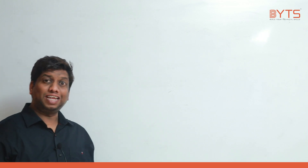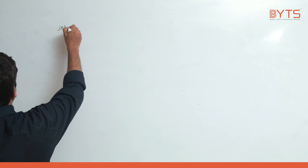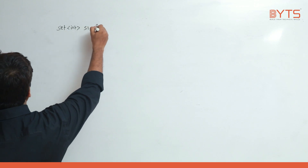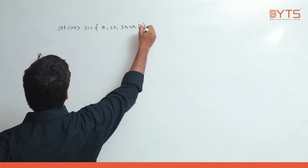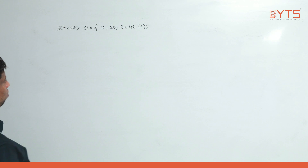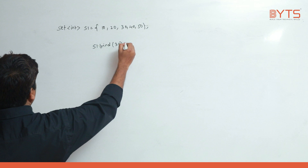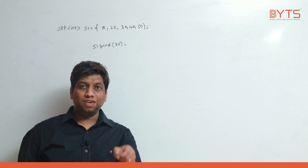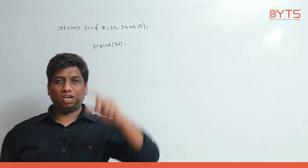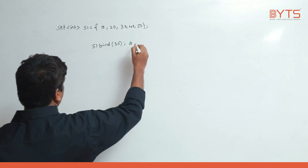Next we are trying to see important functions. set<int> s1 = {10, 20, 30, 40, 50}. s1.find(30) — whenever I write s1.find(30), if 30 is there, find will return an iterator to 30.